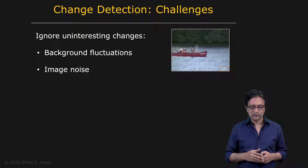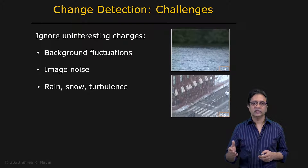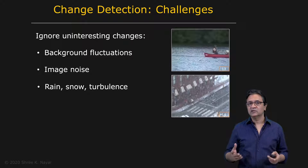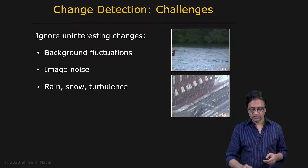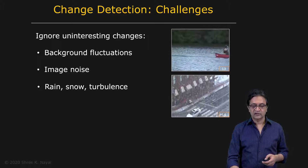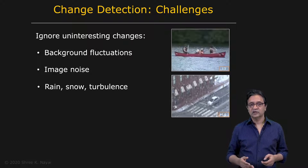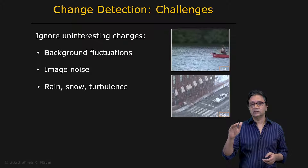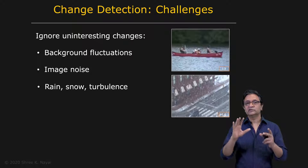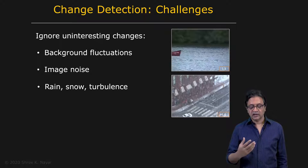We want our techniques to be robust to those kinds of changes. Other potentially uninteresting changes include weather effects such as rain and snow — these are particles passing through pixels that are not of interest to us. For example, we want to find cars coming down a street, not every raindrop. Fluctuations caused by rain, snow, and even turbulence — such as the mirage or waviness effect when looking at something far away — are all uninteresting changes in our context.